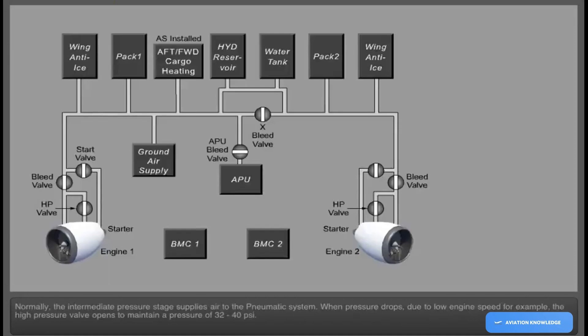Normally, the intermediate pressure stage supplies air to the pneumatic system. When pressure drops due to low engine speed, for example, the high-pressure valve opens to maintain a pressure of 32 to 40 psi.